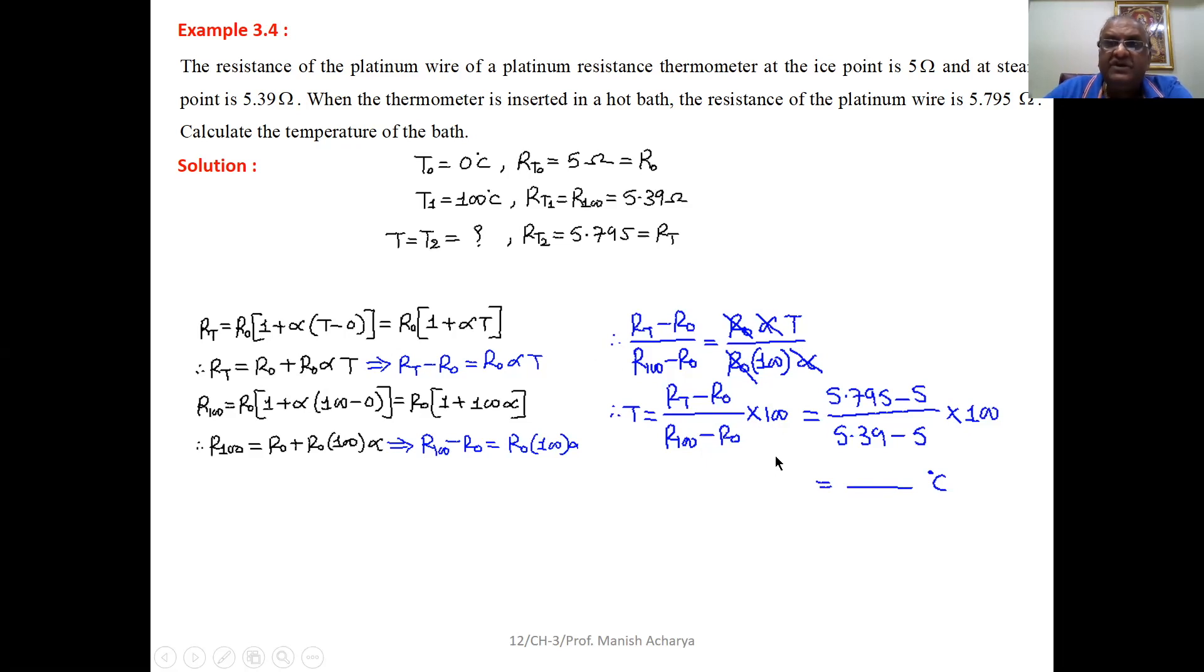Now substitute the values. R at the temperature of hot bath, that is given to you 5.795. Then resistance at 0 degrees Celsius, that is 5 ohm. Then resistance at 100 degrees Celsius, that is 5.39. Again, R0, 5 into 100 as it is. Now simplify this one. You will get the temperature of hot bath.